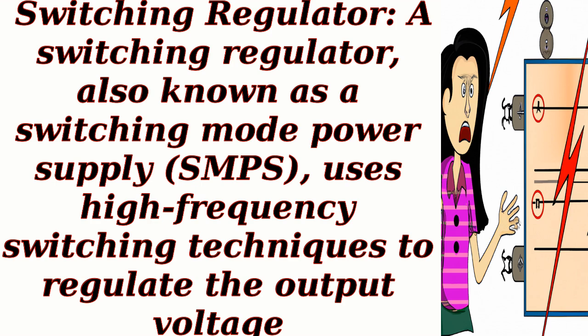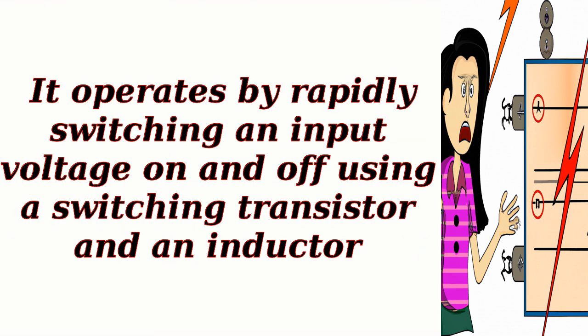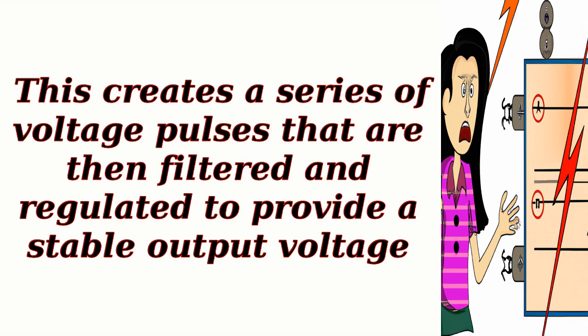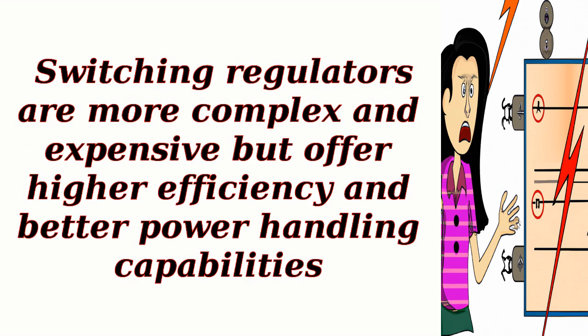Switching regulator. A switching regulator, also known as a switching mode power supply (SMPS), uses high-frequency switching techniques to regulate the output voltage. It operates by rapidly switching an input voltage on and off using a switching transistor and an inductor. This creates a series of voltage pulses that are then filtered and regulated to provide a stable output voltage. Switching regulators are more complex and expensive, but offer higher efficiency and better power handling capabilities.